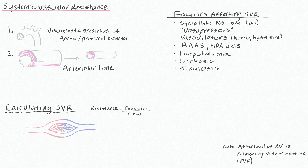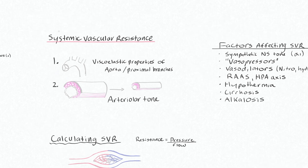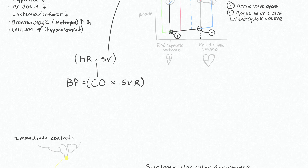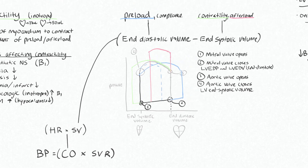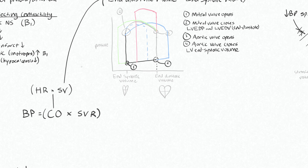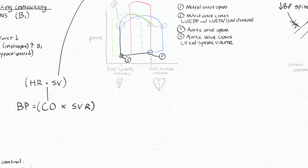Let's talk about SVR — systemic vascular resistance. Blood pressure is the product of cardiac output times SVR. Systemic vascular resistance is essentially the same as afterload and is also a determinant of stroke volume. By having higher afterload you'll have a slightly lower stroke volume, and the overall resistance to the flow of your cardiac output is what determines your blood pressure.